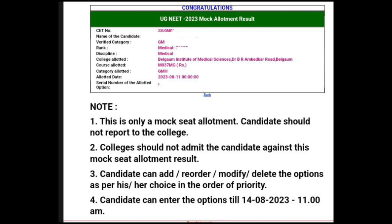So this is how it is given if a seat is allotted to you. Same way, even if an engineering seat is allotted, the same type of result will be released. But suppose instead of this, if a code is given to you, KEA has not clarified what it is. But if the candidate is not allotted any seat, most probably they are getting a code like that — that is what I feel. So if a seat is not allotted, it is giving a code.